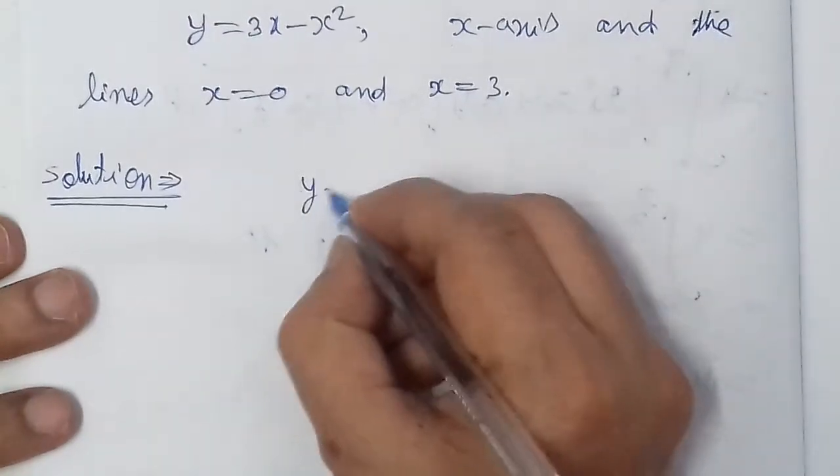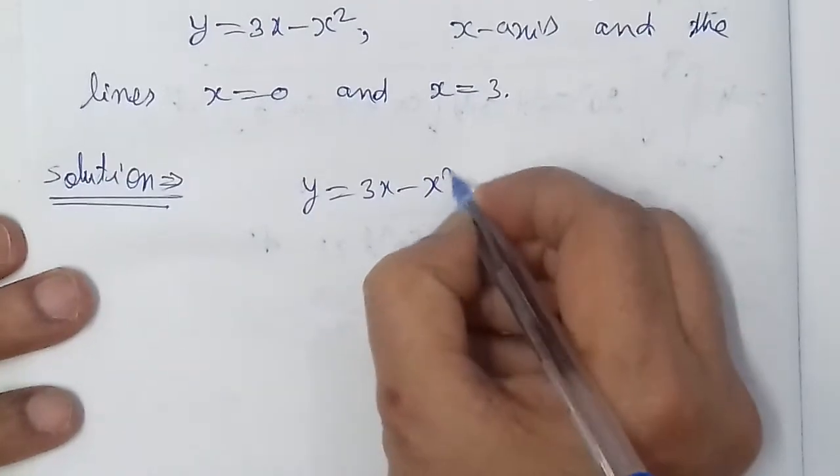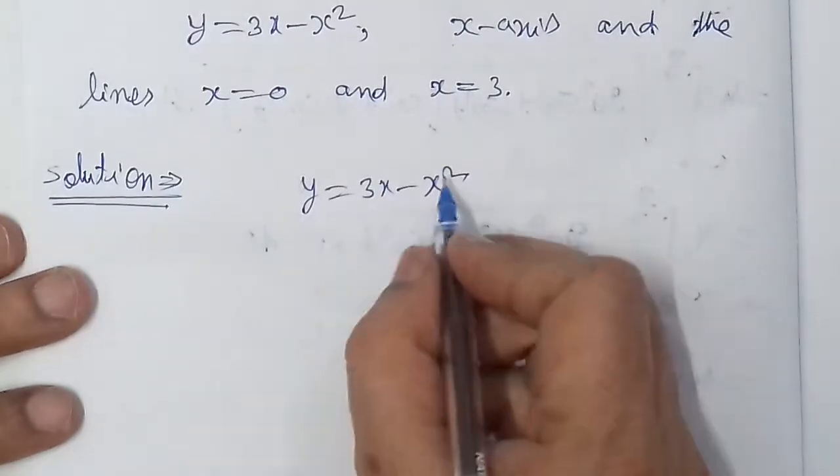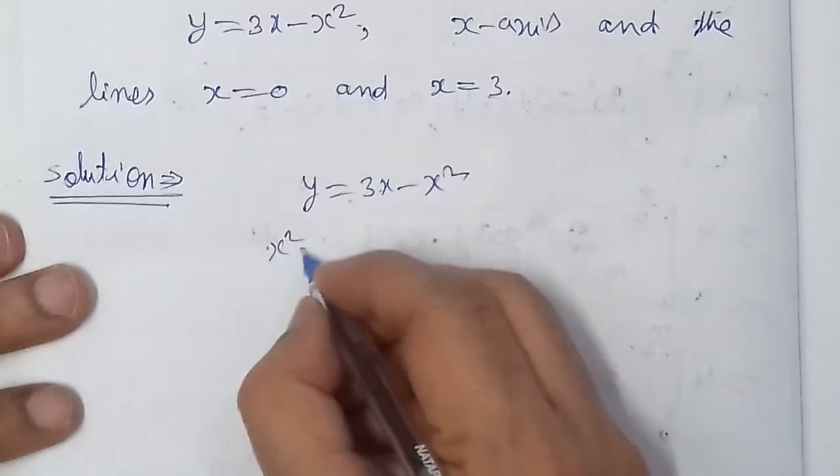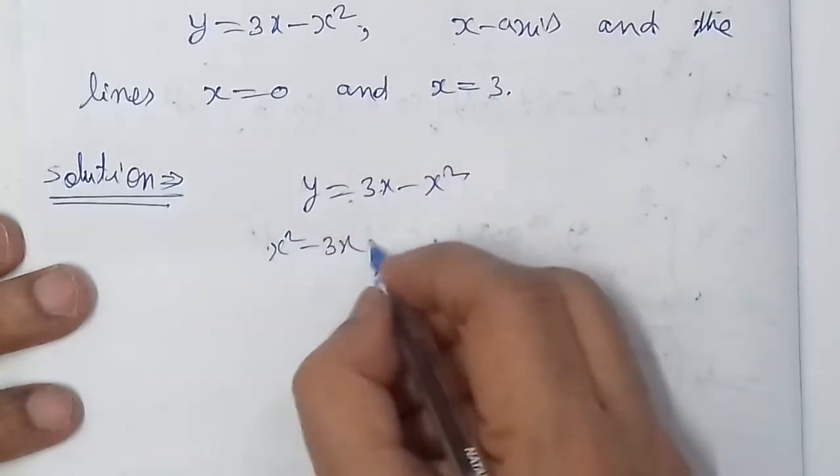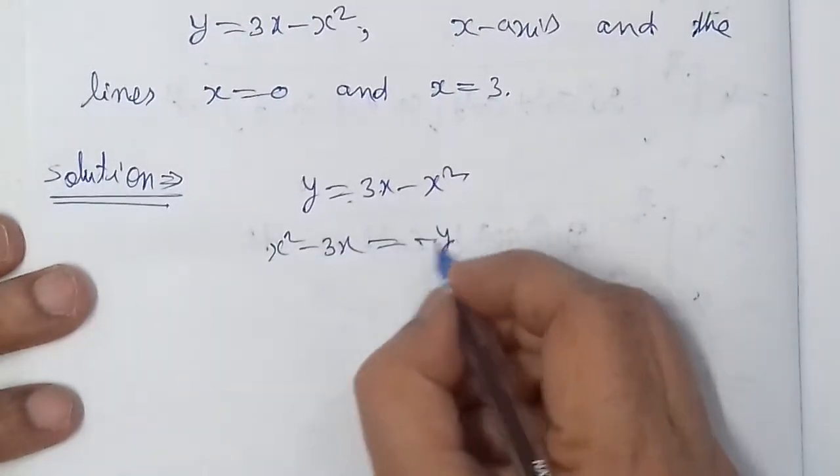We have the curve y equals 3x minus x squared. We can rewrite this as x squared minus 3x equals negative y, then rearrange to get the curve form.